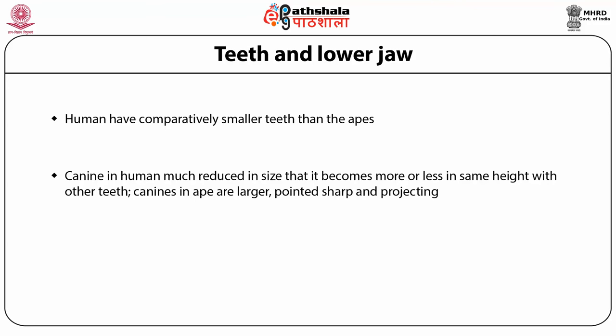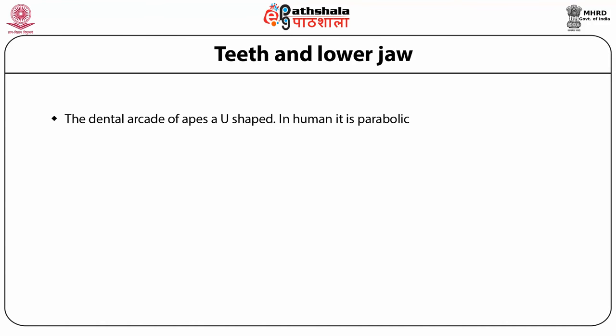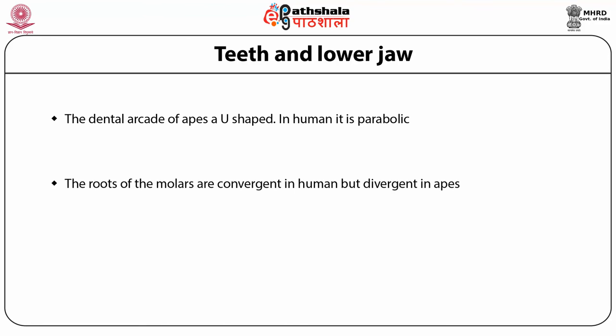The canine in apes is larger, pointed, sharp, and projecting. Diastema is variably present in apes but altogether absent in humans. The posterior teeth in apes are larger than those of humans and are arranged in parallel rows, giving the dental arcade of apes a U-shape. In humans, the dental arcade is parabolic. The roots of the molars are convergent in humans but divergent in apes.